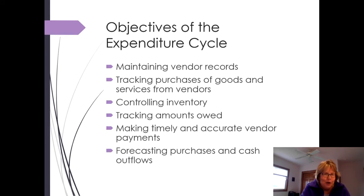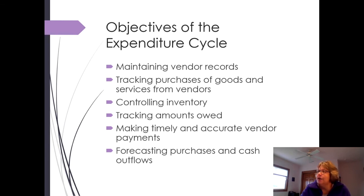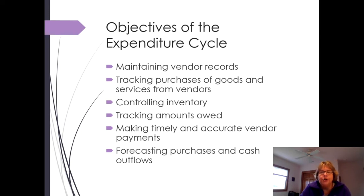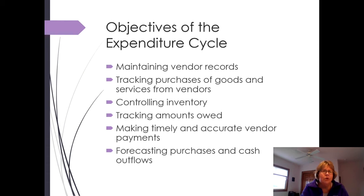Obviously paying for them is critical because you won't be able to get more goods and services if you don't pay for what you get. Some things we want to achieve in the expenditure cycle: first, maintaining vendor records, similar to what we did with customer records — making sure we have accurate information. We want to track our purchases from the vendor so we know who we're spending our money with, and that allows us to negotiate discounts or lower prices.